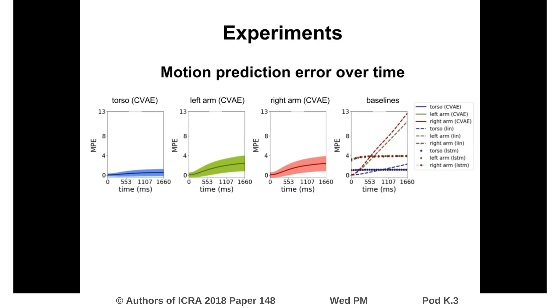We investigate the predictive performance of our model. Here you see the average motion prediction error over time for the torso and the left and right arm. The uncertainty of our model grows over time. Our model outperforms the baseline models, which are a linear extrapolation and a recurrent neural network.